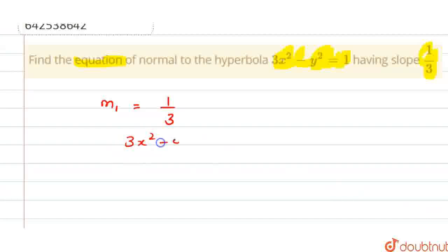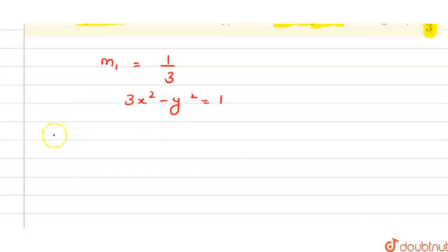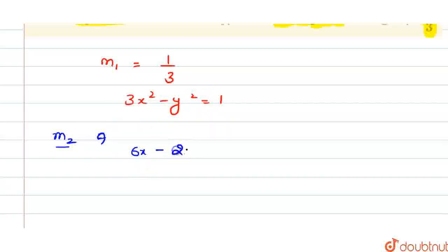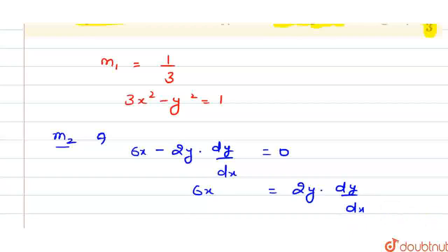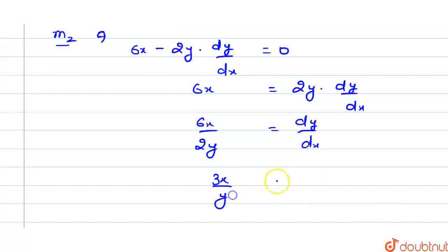The slope of the hyperbola 3x² minus y² equals 1. The slope of the tangent to the hyperbola will be given by dy/dx. So if the slope of the tangent is M2, then dy/dx — differentiating the whole equation with respect to x — gives 6x minus 2y·(dy/dx) = 0, which implies dy/dx = 6x/2y = 3x/y. This is the slope of the tangent, M2.